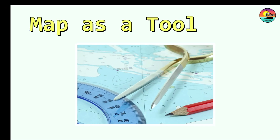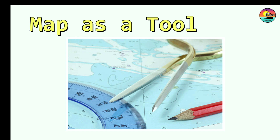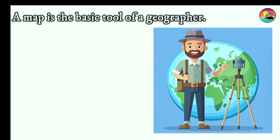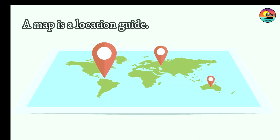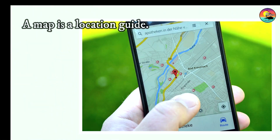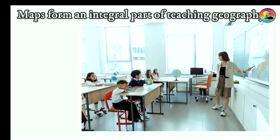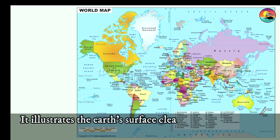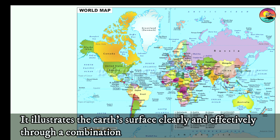A map is a basic tool of a geographer and a location guide. Maps form an integral part of teaching geography. It illustrates the earth's surface clearly and effectively through a combination of drawings, charts, and symbols.